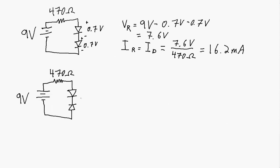In this last circuit, one diode is forward biased and one is reverse biased. Since current cannot pass through a reverse-biased diode, the current in the entire circuit will be 0.